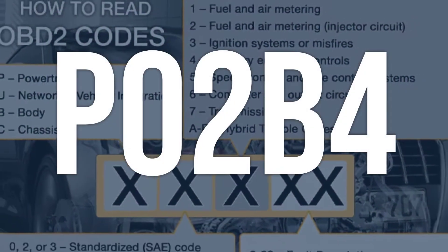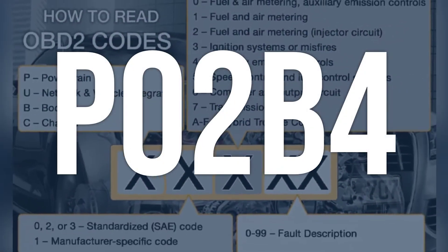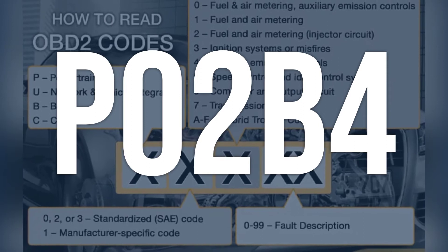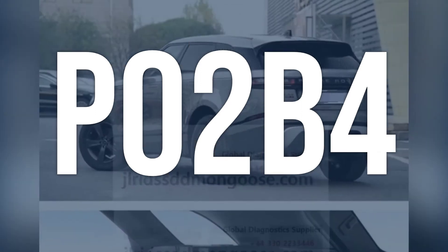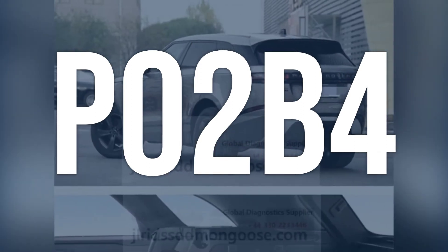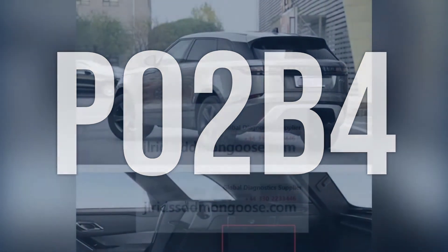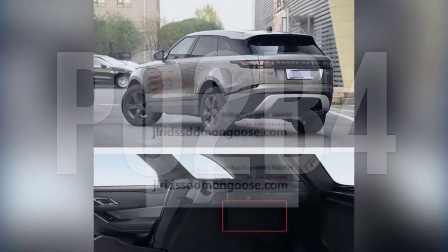OBD-2 code P02B4 means that there is a restricted injector in cylinder 7, which can result in decreased engine performance.